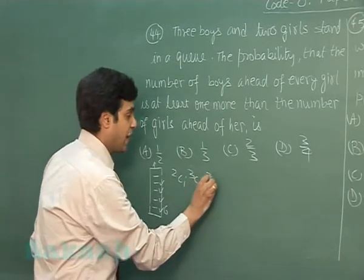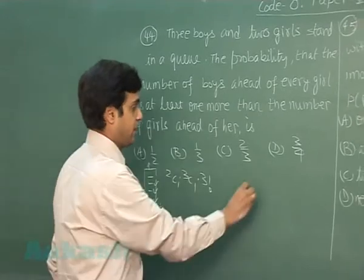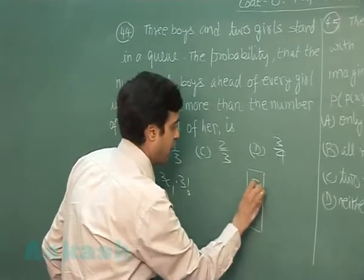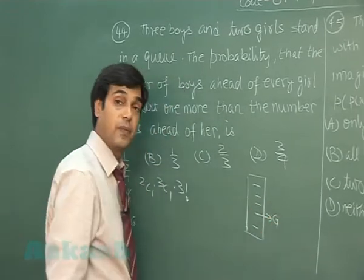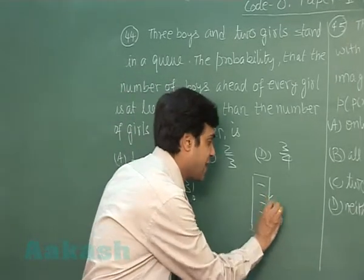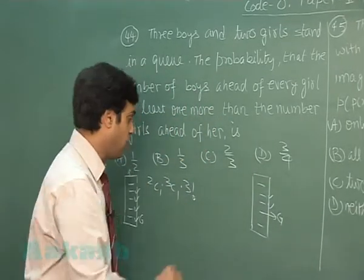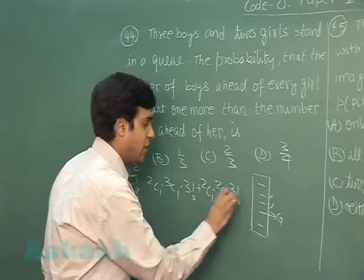Next possibility: if suppose the first girl sits here, next girl should be at any of these two positions as per the given constraint. So this time 2C1 into 2C1 into factorial 3.